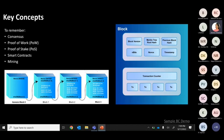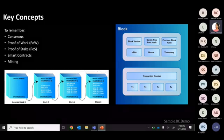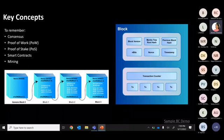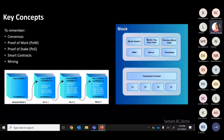Currently, terms and conditions are in a documented format — when applying for a loan or opening a bank account, you see them on paper or online. In blockchain, those same conditions are in a programmable format fed into the blockchain. They automatically execute and validate whether all transactions are performed as per the defined rules — eliminating the need for intermediaries.